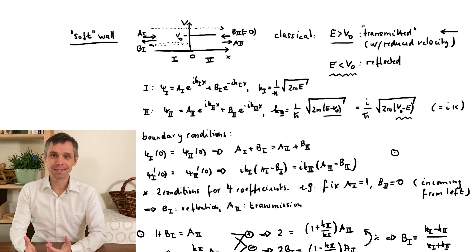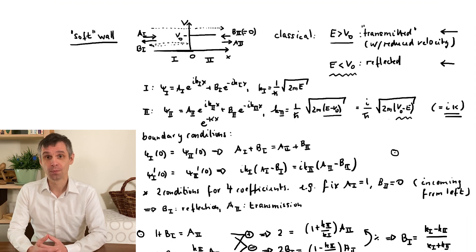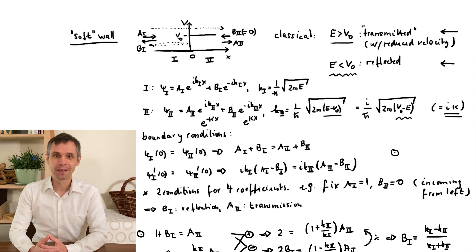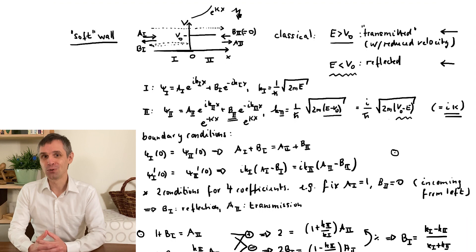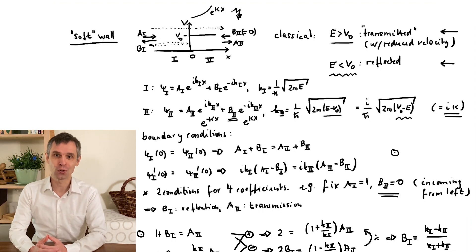So, now let us look at the case where the classical particle is always reflected. Here, we have to use the real exponentials in region 2. But we can really only admit the one that decays into the region. The other violates our general boundary conditions. So, this again dictates b2 equal to 0, but this is now a strict physical condition, not due to our choice to describe a certain physical scenario.